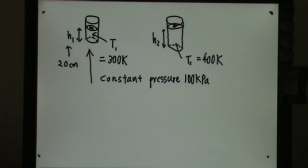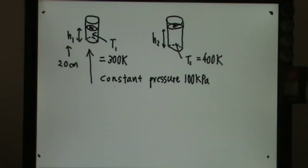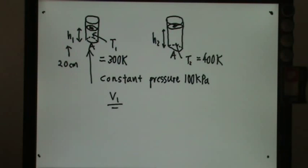The piston moved upward, having a height of H2. Apparently the height has increased, so we can apply Charles' Law into this. Technically speaking, the volume 1 is actually AH1 and the volume 2 is actually AH2. So we can write V1 over T1 equals to V2 over T2.